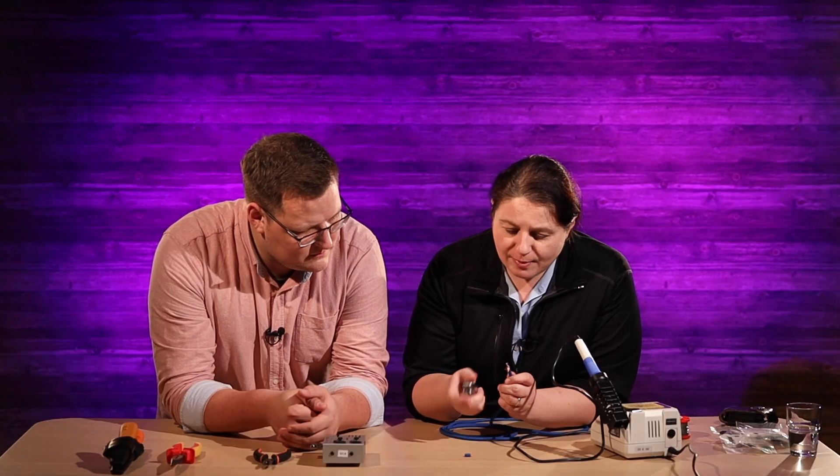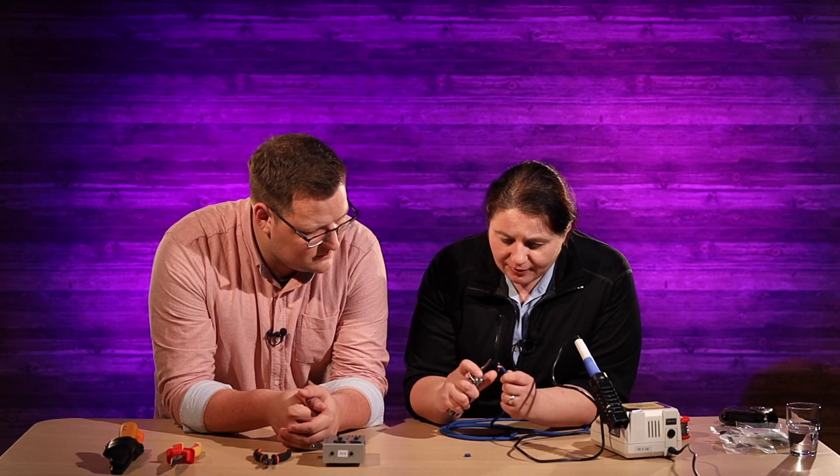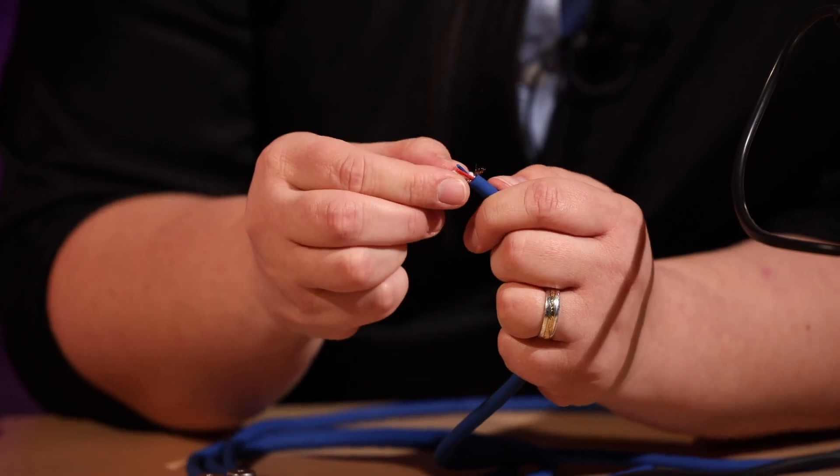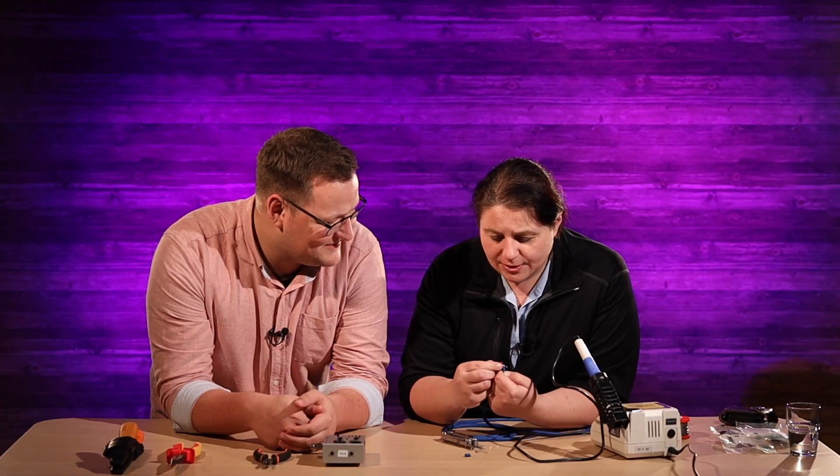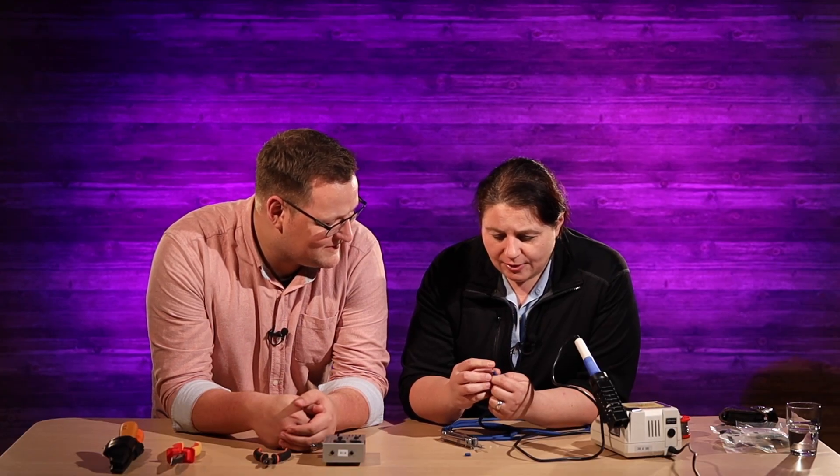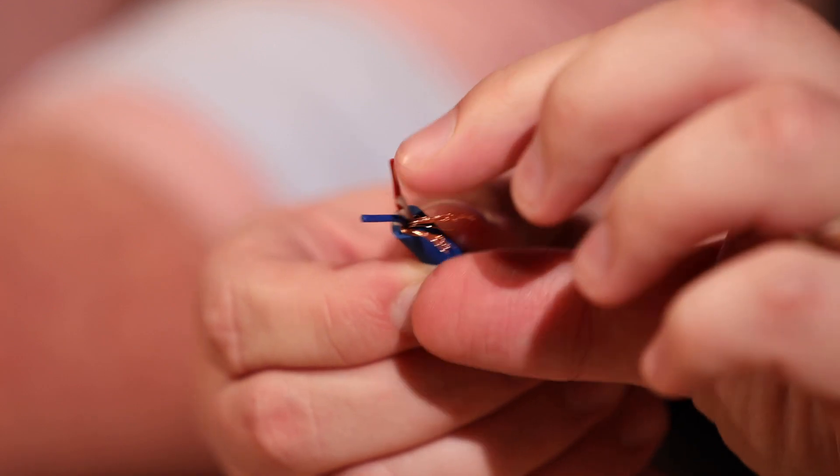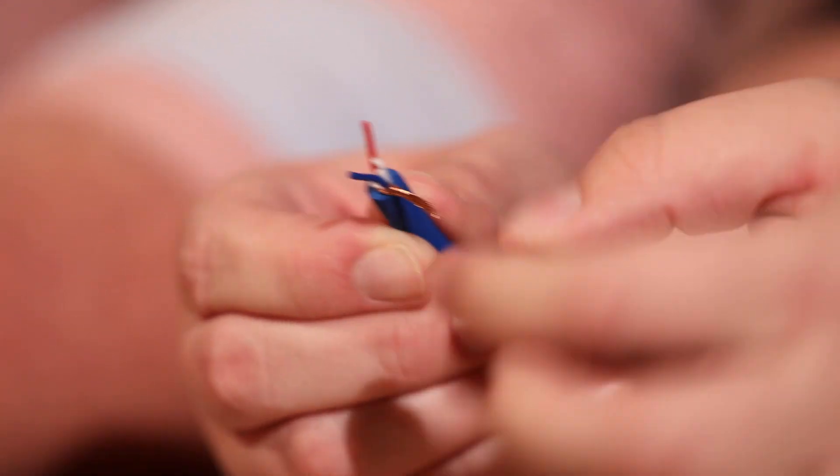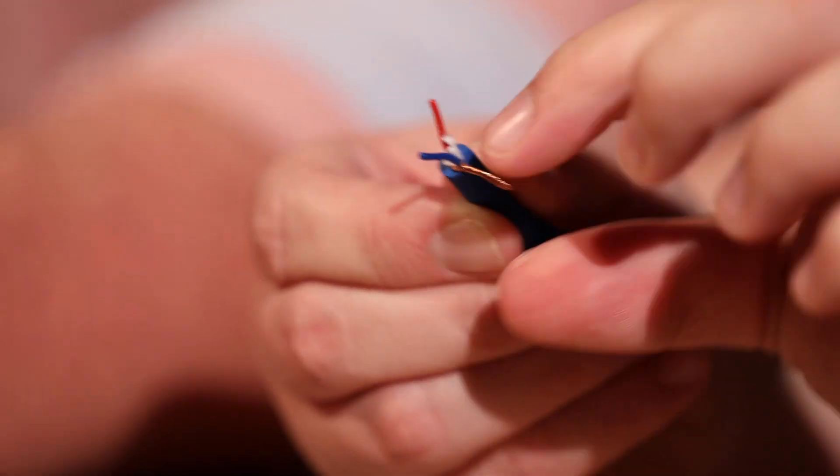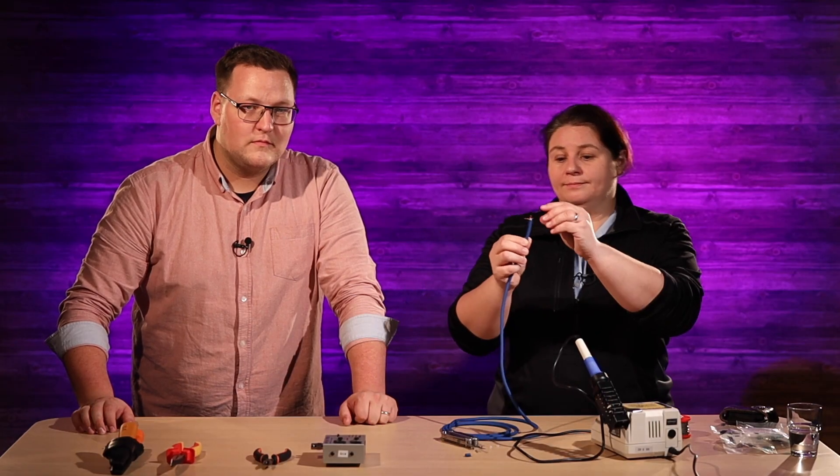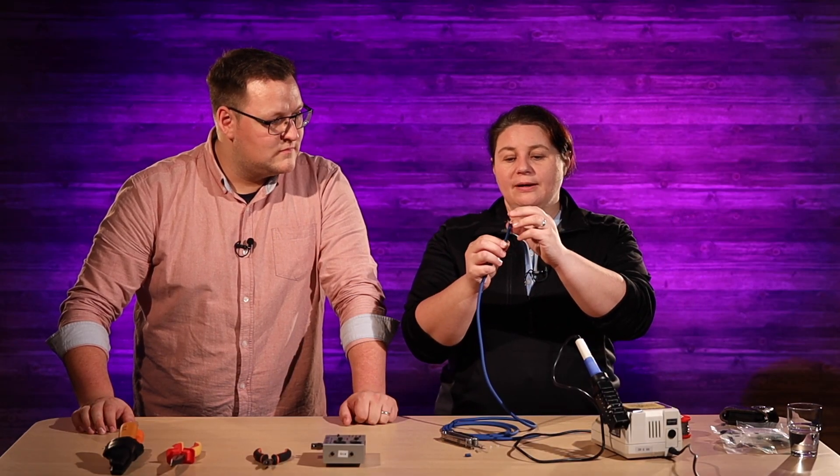In between the copper is this cotton insulation. It does nothing. So I just take my Leatherman scissors and take the cotton out of the way. What you want to do is take the copper shield which runs the whole length of the cable and twist it all together so it doesn't get away from you because now that becomes your ground cable.